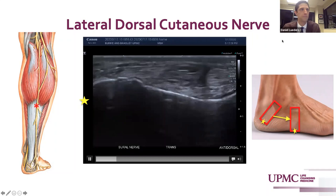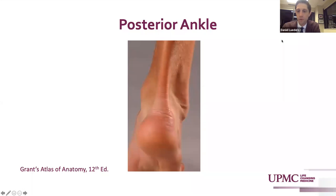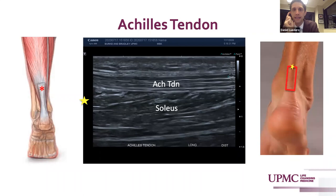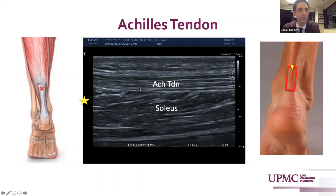Moving on then to the posterior ankle — there are fewer anatomic structures in the posterior ankle and these are more superficially distinct. The Achilles tendon, its retrocalcaneal bursa, the retroachilles bursa, and the plantaris tendon are the prominent structures. The Achilles tendon is the longest and thickest tendon in the body, up to 12 to 15 centimeters in length, comprised from contributions of the medial and lateral head gastrocnemius muscles superficially and soleus. Unlike most other tendons that have a tenosynovium, this Achilles tendon does not, but rather has what's called a peritenon, which contributes to pathology.